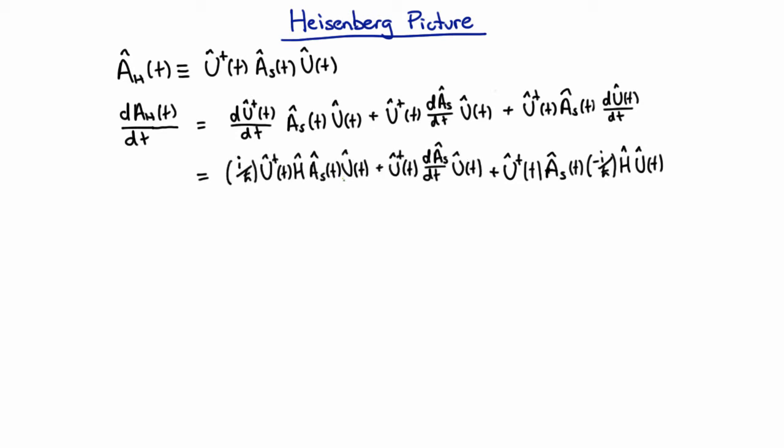And again we can use the trick that this time evolution operator is unitary, which means that the time evolution operator times its Hermitian conjugate is the identity. And so if we insert that in there, and we can always insert the identity, then we're going to end up with a u-dagger h u, and that's just going to be the Heisenberg operator, and we're going to end up with this u-dagger as u, and that's just going to be the Heisenberg operator by definition.